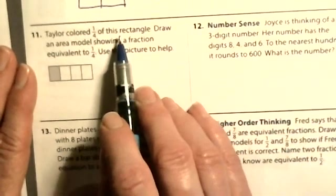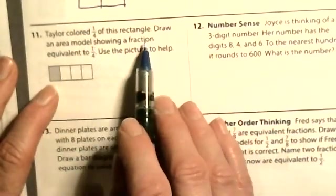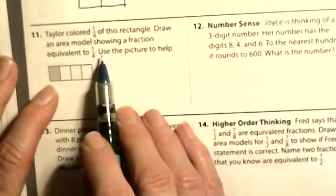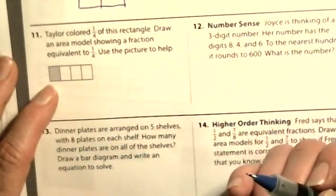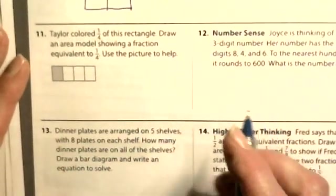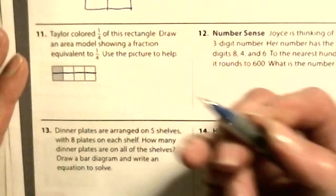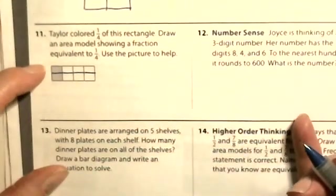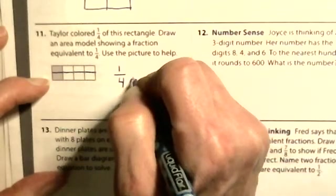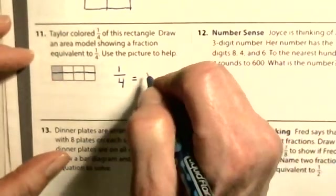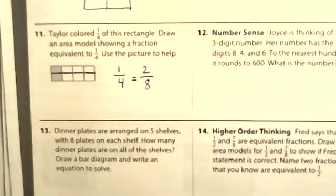Taylor colored one-fourth of his rectangle. Draw an area model showing a fraction equivalent to one-fourth. All we have to do is put a line going through — one-fourth is equal to two-eighths.